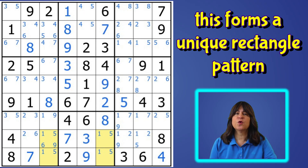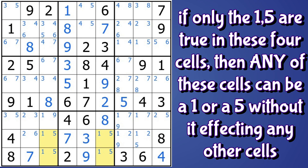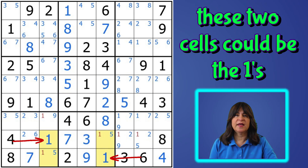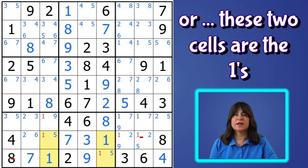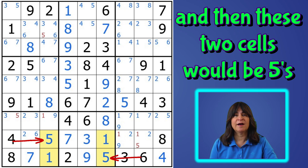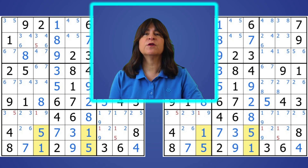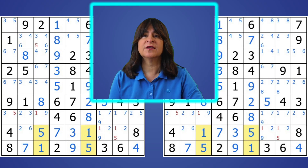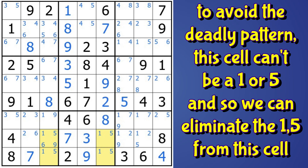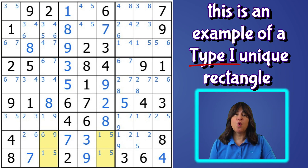For the time being, just ignore the extra candidates in this cell. Now, if only the one and the five were true in these four cells, any of these cells could be a one or a five without affecting any of the other cells in the puzzle. So these two cells could be the ones and these two cells would be the fives, or these two cells would be the ones and then these two cells would be the fives. But regardless of which two cells are the ones and which two cells are the fives, it doesn't have any effect on the rest of the puzzle. So we have more than one solution here. Some people refer to this as a deadly pattern, because it would invalidate a puzzle by having more than one solution. So that means to avoid the deadly pattern, this cell can't be a one or a five — it's either the six or the nine — and we can eliminate the one and five from this cell.